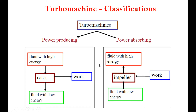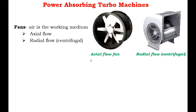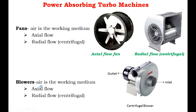Now see the classification of power-absorbing Turbomachines. The first type is a fan, in which air is the working medium. It is classified into two types: axial flow and radial flow. Another type is the blower — again, air is the working medium — and it is also classified into axial flow and radial flow.